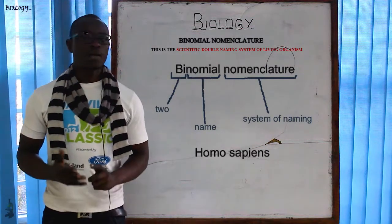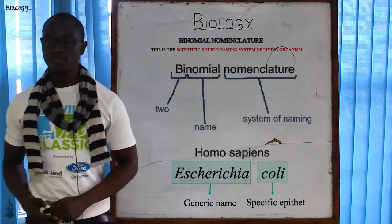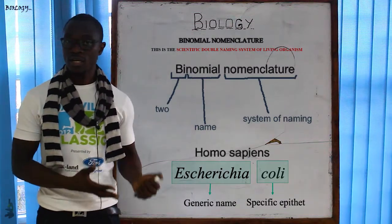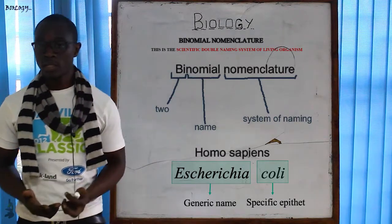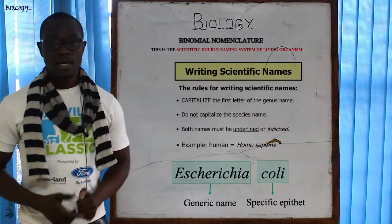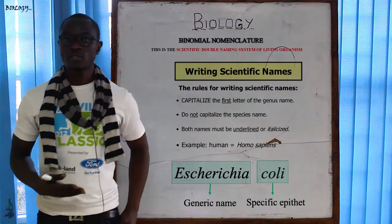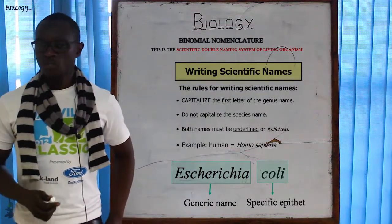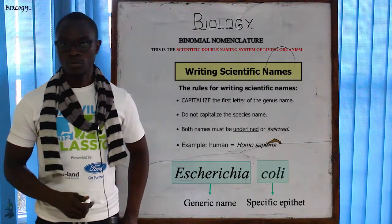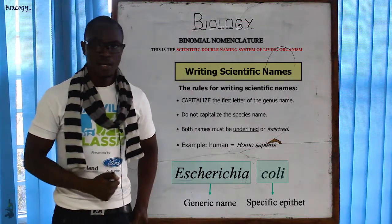In this scientific double naming system, an organism is always given two names. The first name is the genus name, also called the generic name, and the second name is the species name, also called the specific name. The genus name always begins with a capital letter, while the species name always begins with a small letter. If you confuse between these two, most likely you'll get your answers wrong.